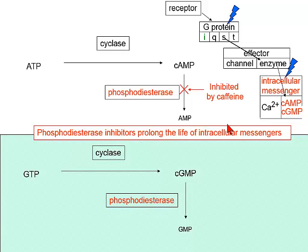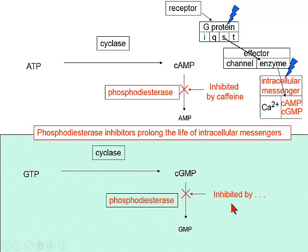There is an analogous pathway in which GTP is cyclized to cyclic GMP. There is also a phosphodiesterase for cyclic GMP, and there is an entire family of these phosphodiesterases. Certain popular drugs inhibit cyclic GMP phosphodiesterase — sildenafil (Viagra) is the well-known example.